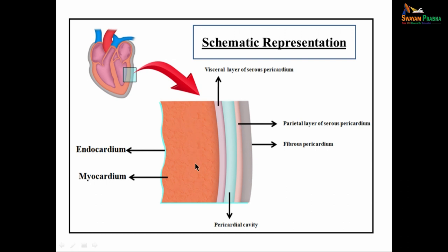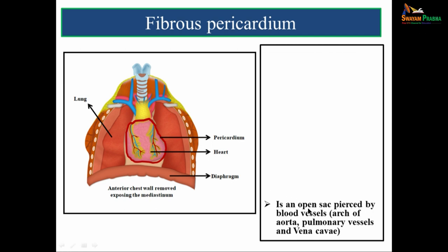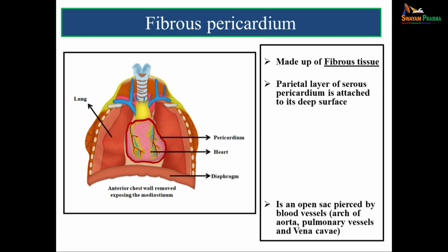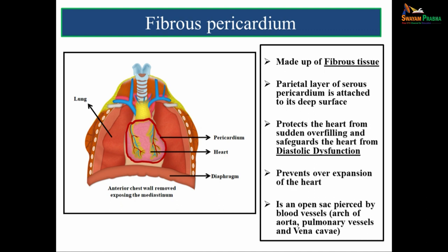This is the myocardium and here you can faintly see the endocardial outline. The fibrous pericardium is an open sac. It is pierced by blood vessels, namely the arch of the aorta, pulmonary vessels and vena cavae. The fibrous pericardium is made up of fibrous tissue. On its inner side, the parietal layer of serous pericardium is attached. The main function of the fibrous pericardium is to protect the heart from sudden overfilling, to safeguard the heart from diastolic dysfunction, and also to prevent over-expansion of the heart.